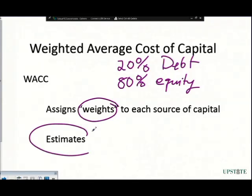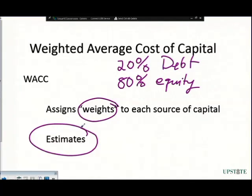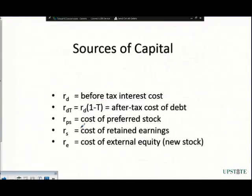We also come up with estimates as to what the cost is. When we're looking at our cost of capital and making a decision about whether to go after a project, we need to know what it's going to take. These are estimates based on historical figures, based on what our bond issues are, what our stock issues are, and preferred stock, etc. When we look at those sources of capital, these are the things that come up underneath it.